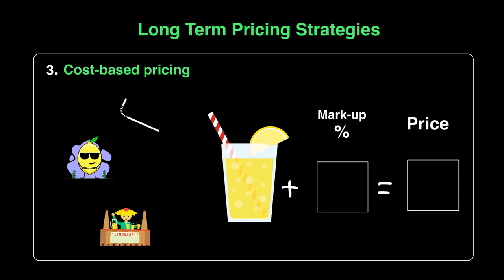The third of these long-term pricing strategies is called cost-based pricing. We know cost is the expenses that are incurred in producing a product. Let's try to find Mike a solution in how to price his glass of lemonade. We understand that in making this lemonade, he had to put in and spend on a few things in order to produce it.